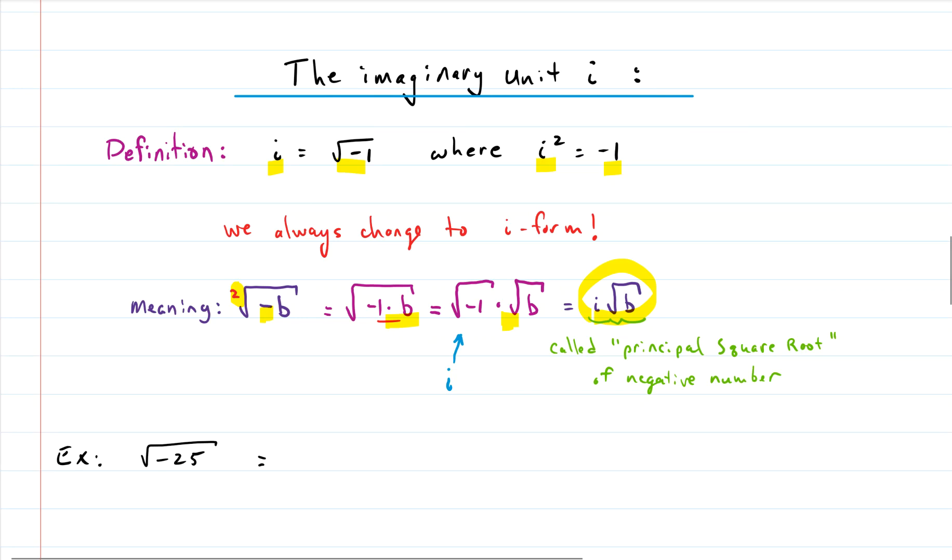So this example here, the square root of negative 25, the i can come out and we have square root of 25 left, and that is five, and so we have 5i.